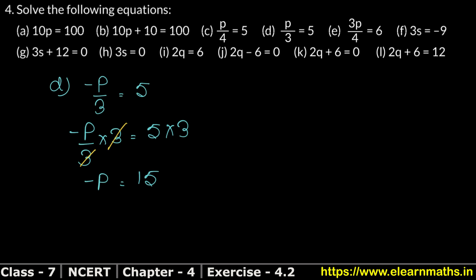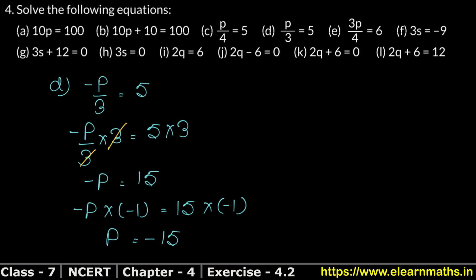Now, if there is a minus sign with the variable, we multiply both sides by minus 1. Minus times minus gives plus, so p equals positive, and minus 1 times 15 gives minus 15. We multiply by minus 1 because we need the variable to be positive. If we multiplied by plus 1, the answer would still be minus p.